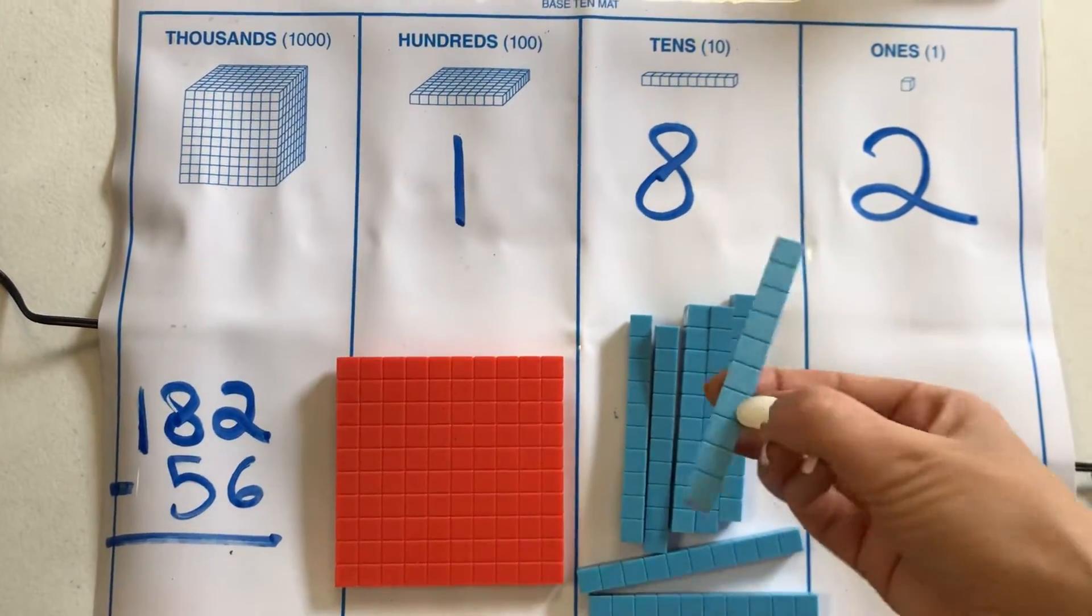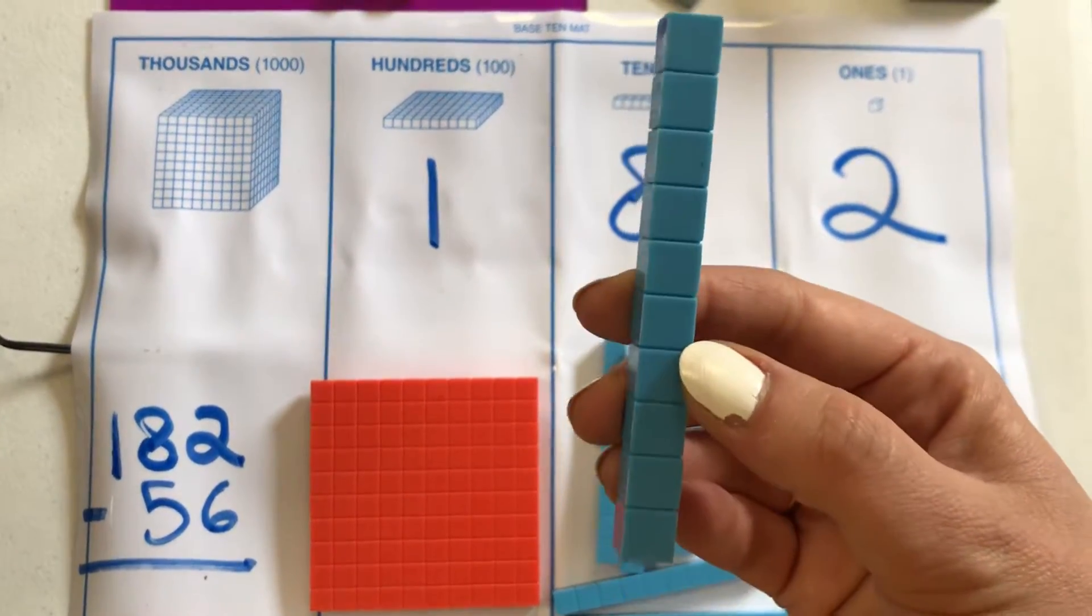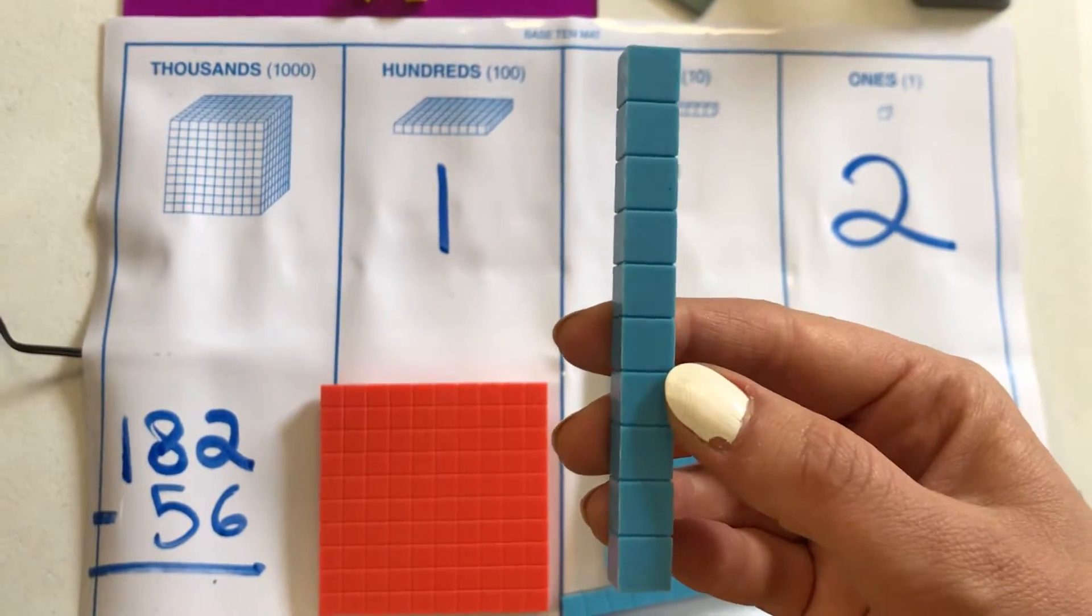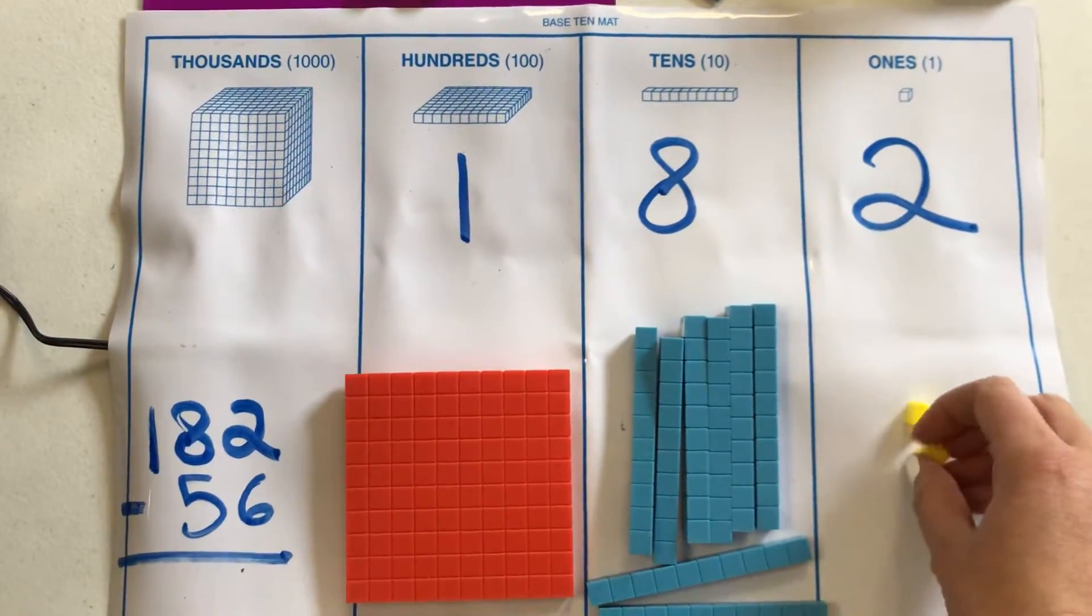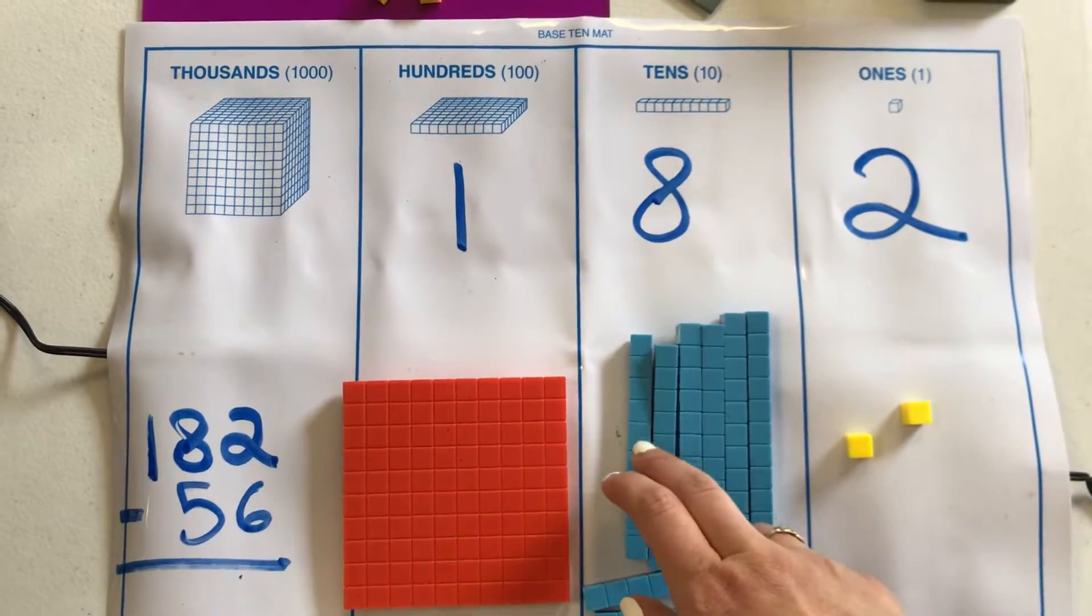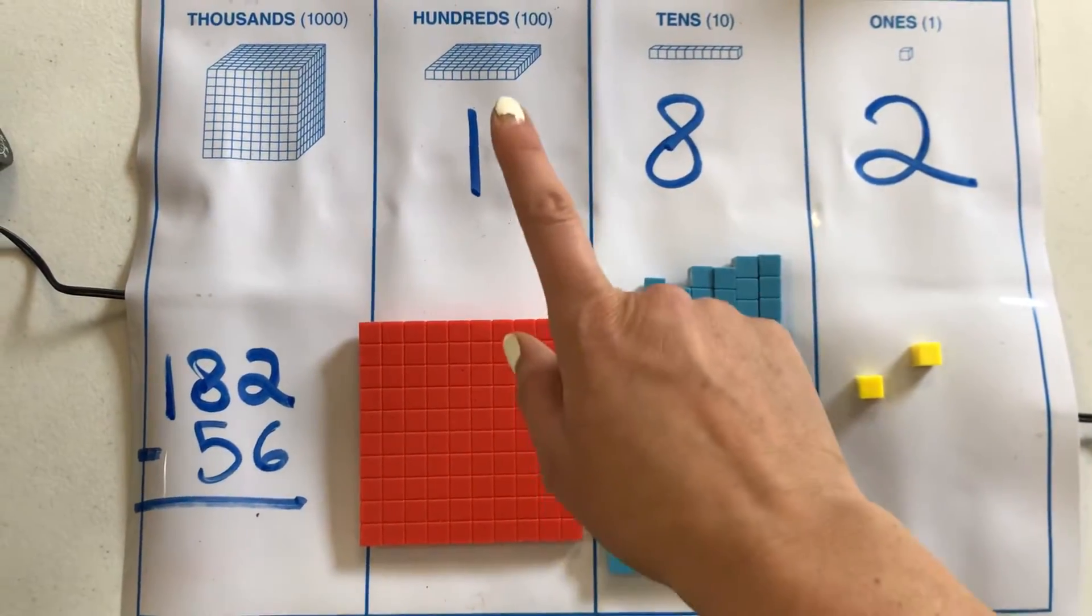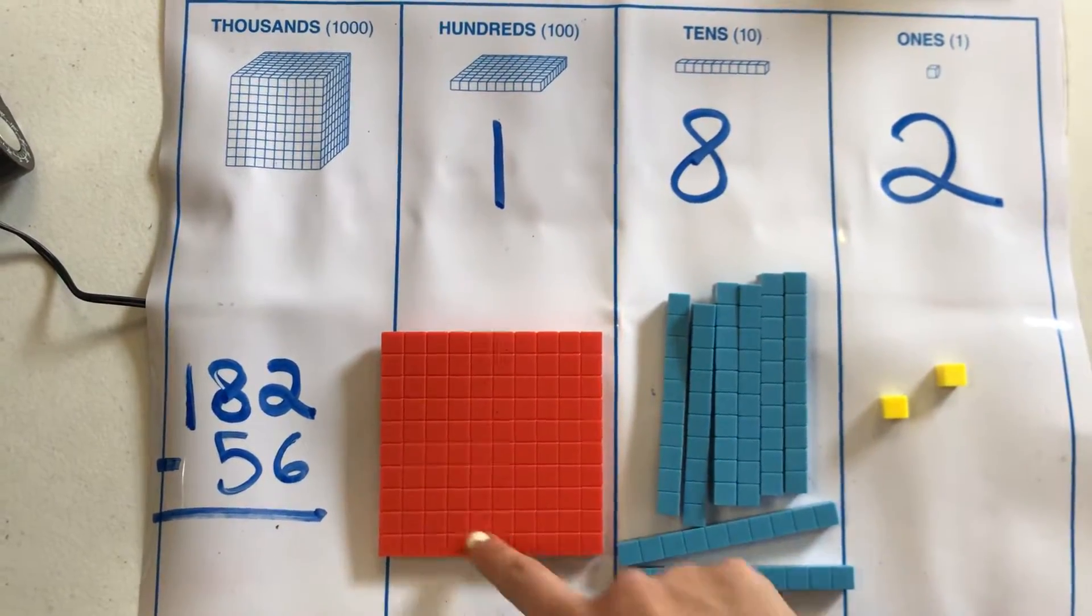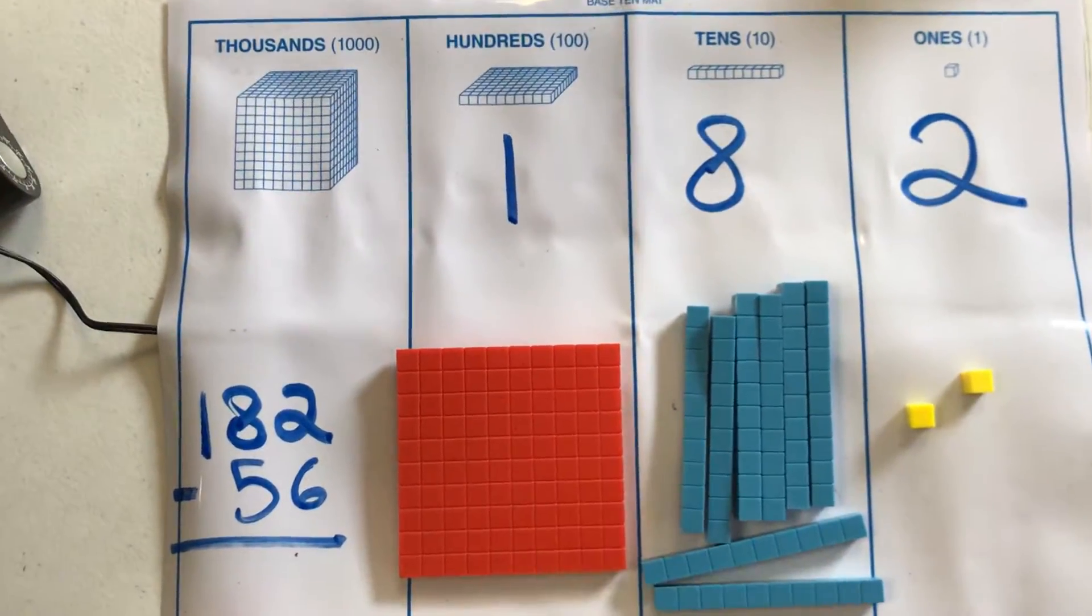And if you notice, a tens stick has 10 little ones that look like these. So counting them out, there's 100 little squares in here. So that's 100.